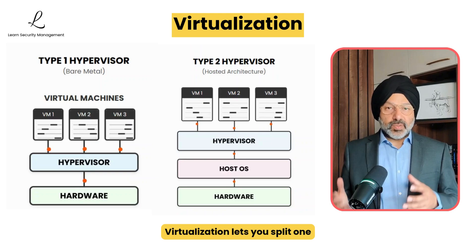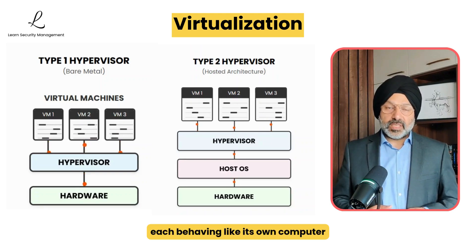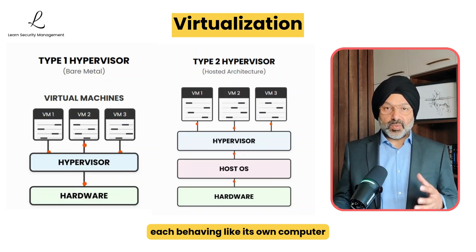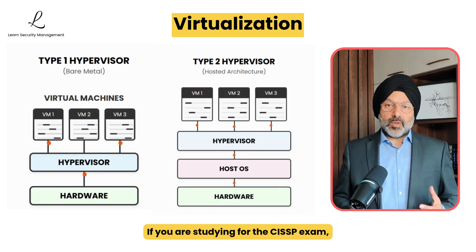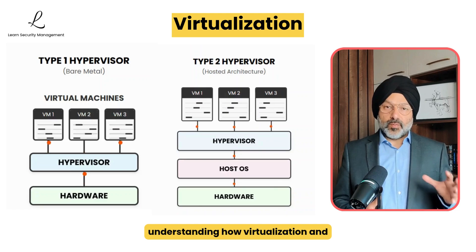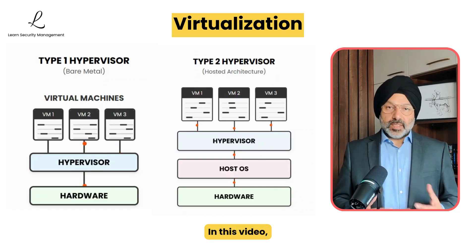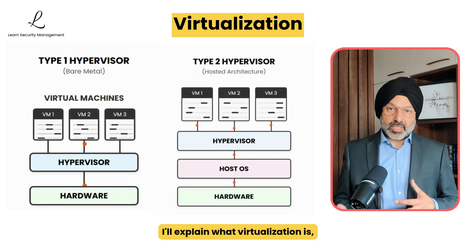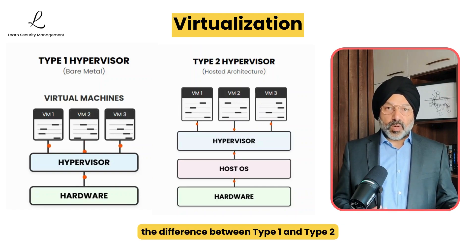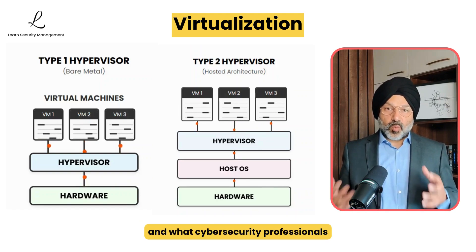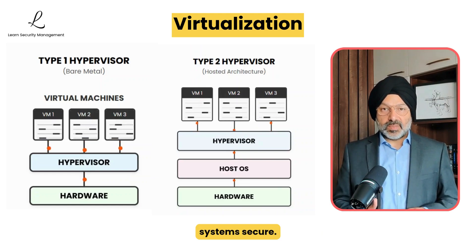Virtualization lets you split one physical computer into many separate virtual machines, each behaving like its own computer with its own operating system and applications. If you are studying for the CISSP exam, understanding how virtualization and hypervisors work is essential. In this video, I'll explain what virtualization is, how hypervisors make it work, the difference between type 1 and type 2 hypervisors, and what cybersecurity professionals need to know to keep these systems secure.